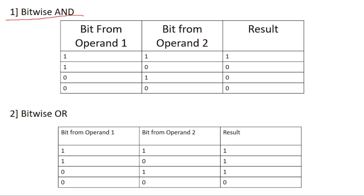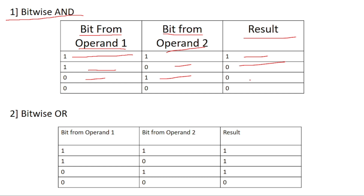Now we will write the truth table for bitwise AND. Bit from operand1, bit from operand2, and result: 1 AND 1 = 1; 1 AND 0 = 0; 0 AND 1 = 0; 0 AND 0 = 0.